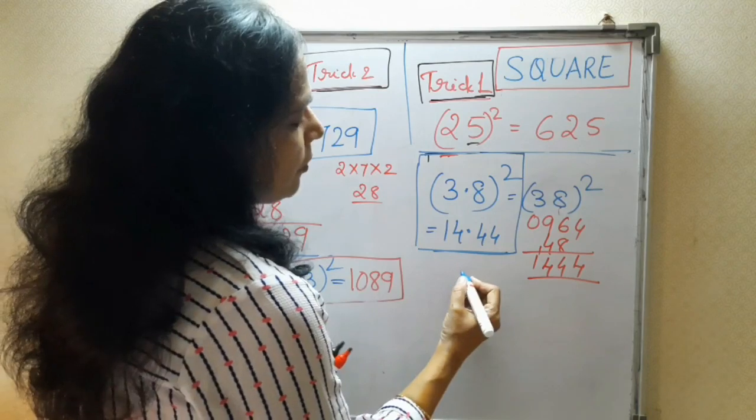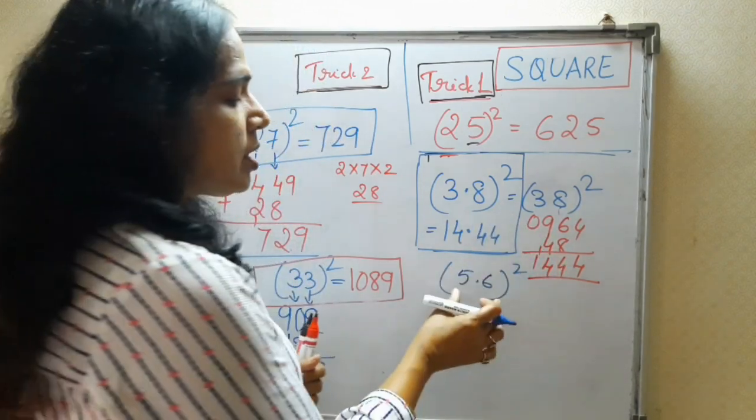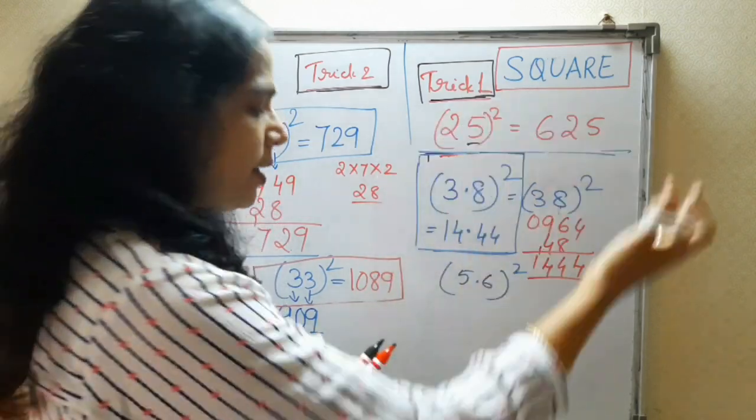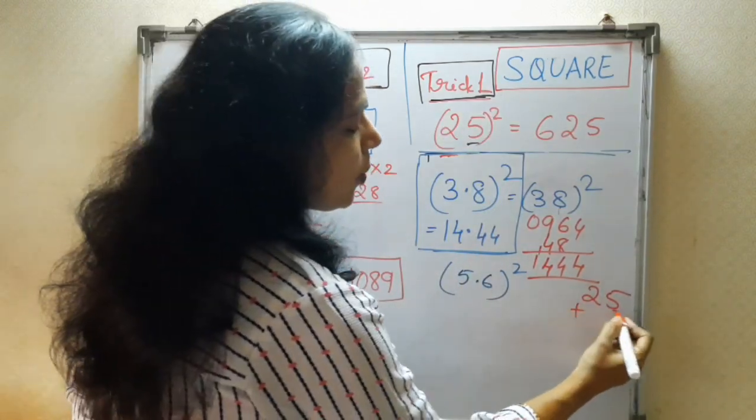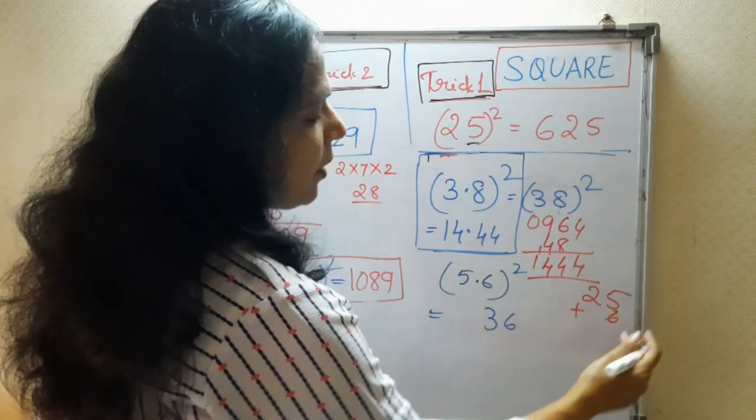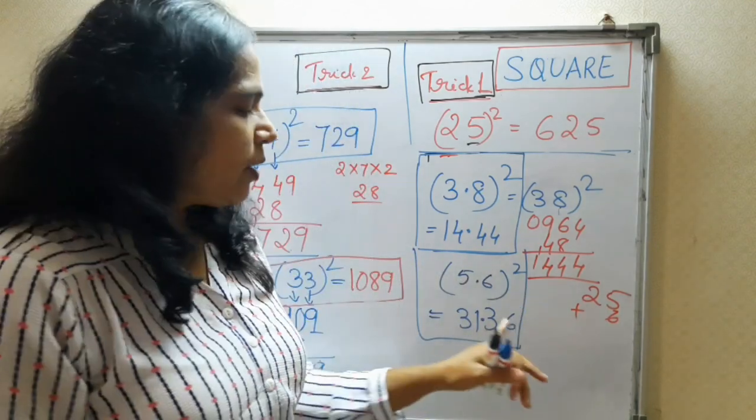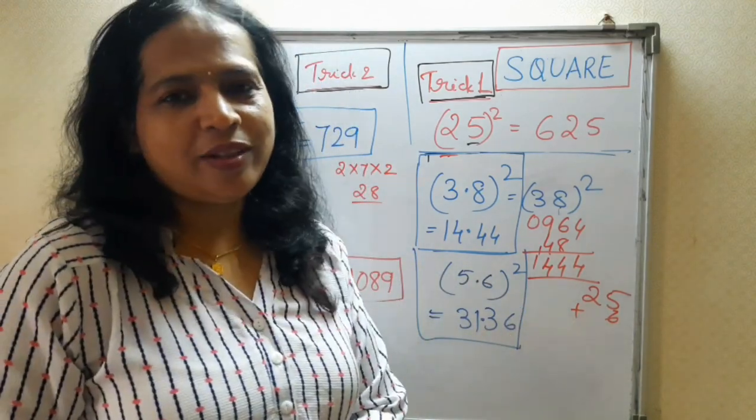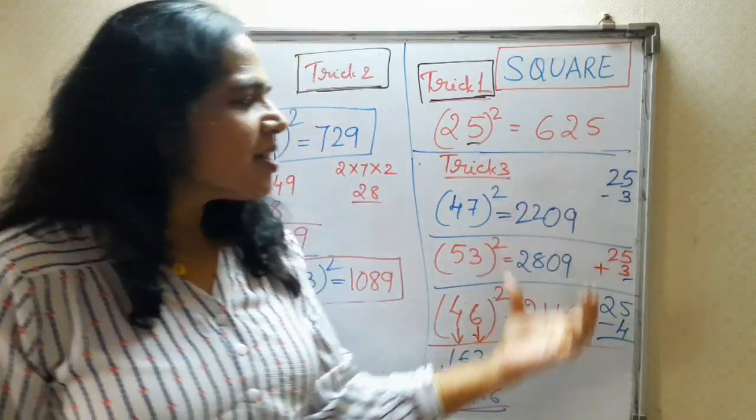Take any number. If it is 5.6 square. Now, this is nearby 50 number. Use that trick. So, 25 aside, 6 is more. So, plus 6. So, you will write here. 6 is the 36. 25 plus 6 is 31. Because this is a decimal, you will give after 2 digit decimal.